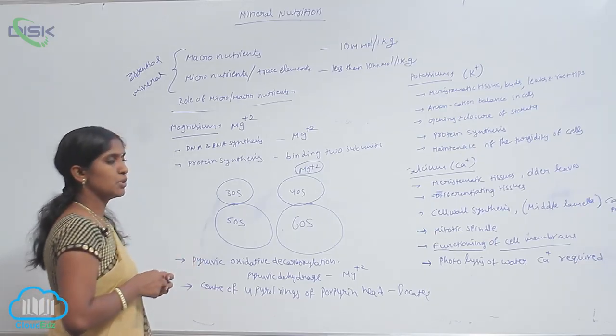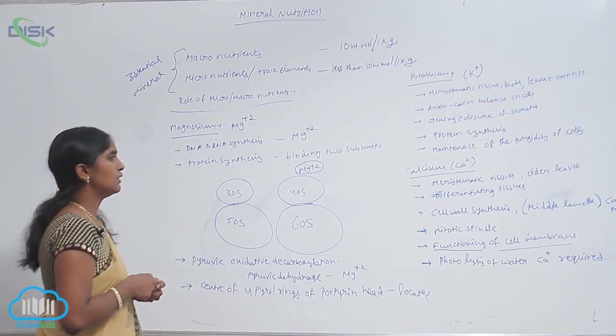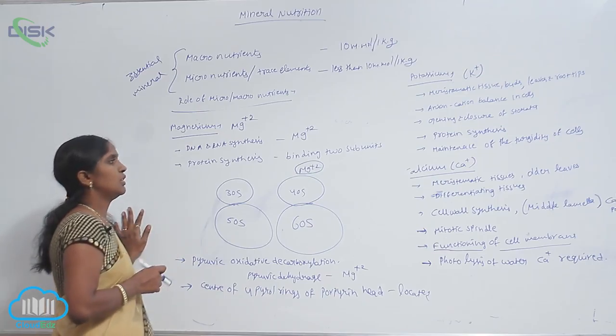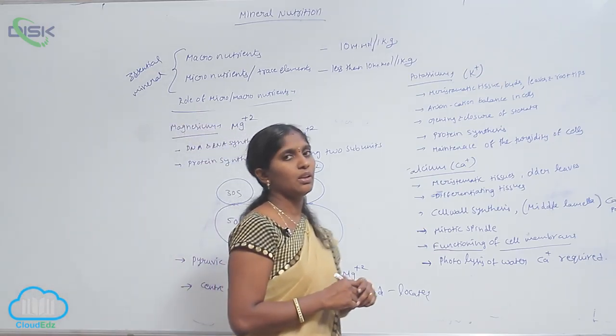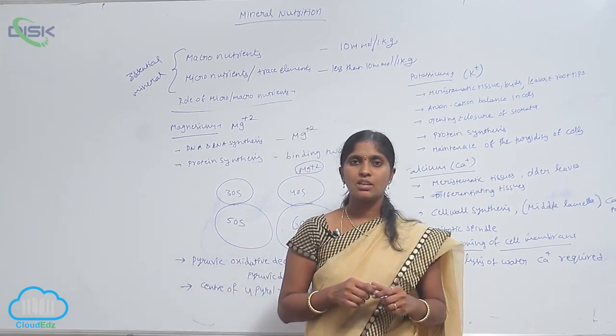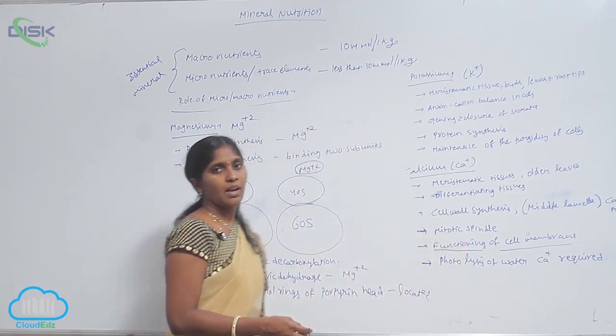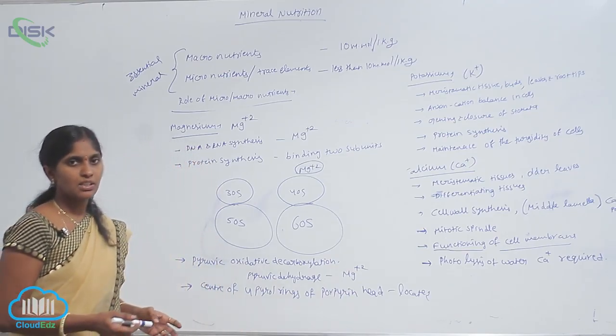Magnesium is absorbed by the plant as a bivalent ion, Mg²⁺. The Mg²⁺ ion plays a key role in DNA as well as RNA synthesis. It also activates the respiratory enzymes.